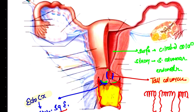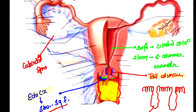Talking about the fallopian tube, it consists of ciliated columnar epithelium. Talking about the ovary, the ovary consists of cuboidal epithelium — also called germinal epithelium.